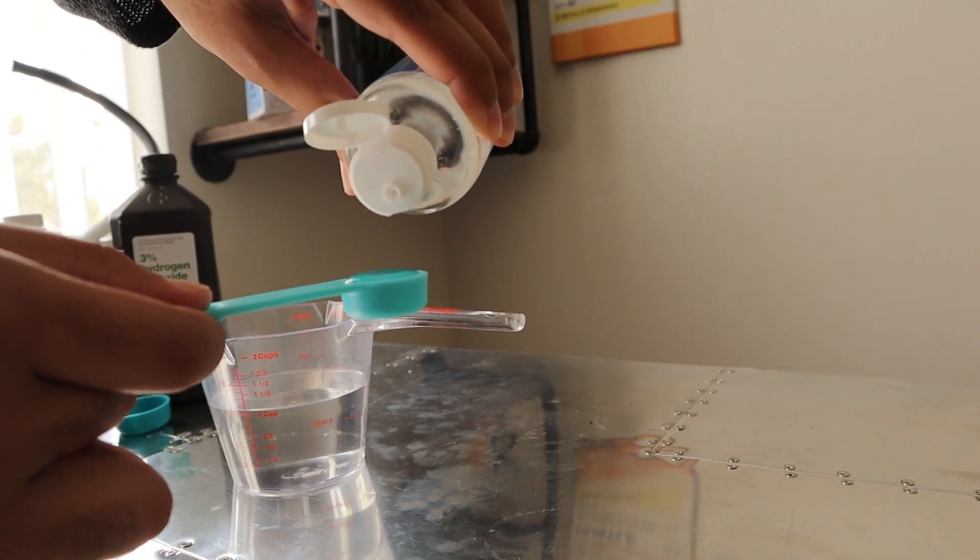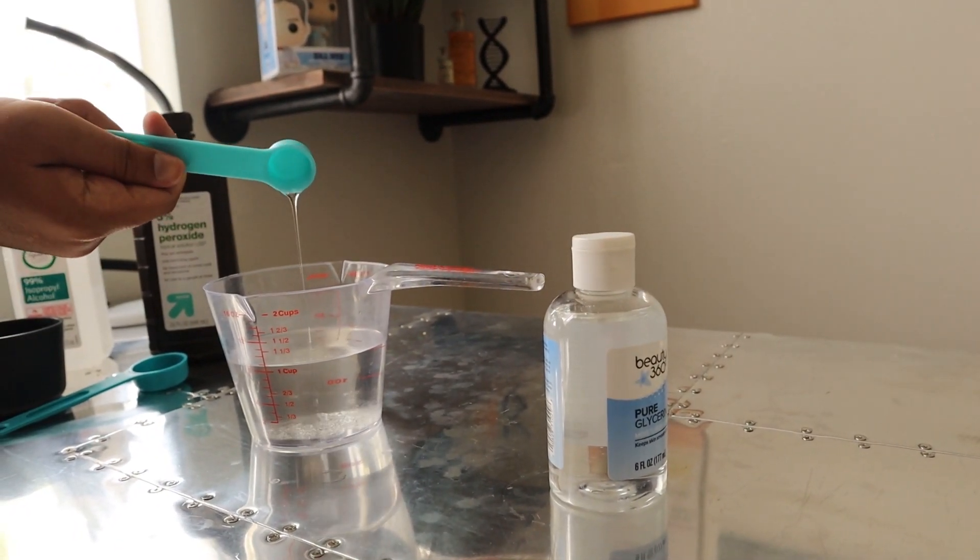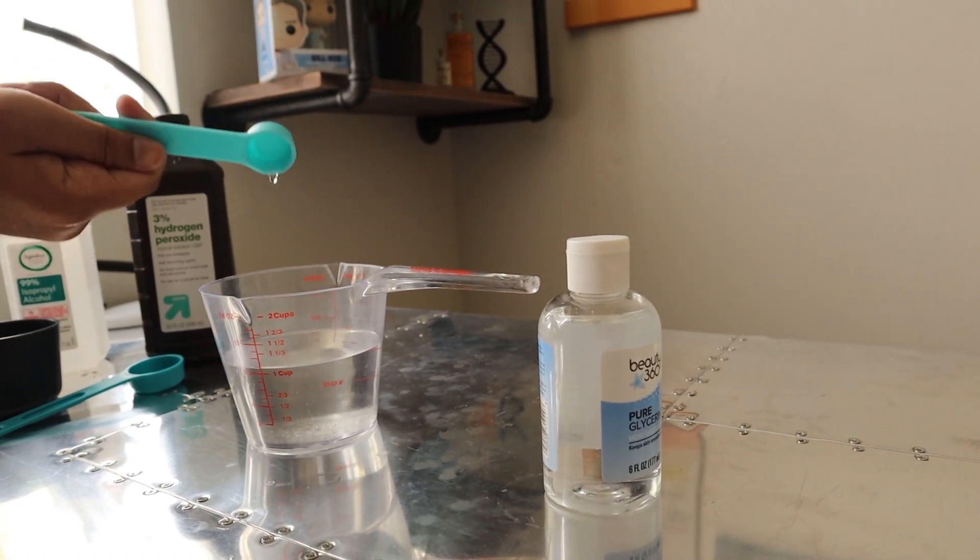The reason why we're using glycerin is because the glycerin is going to help out as a moisturizer to prevent the hands from drying out from all the alcohol we're using.